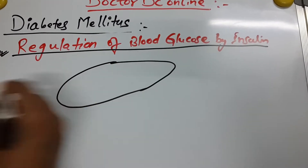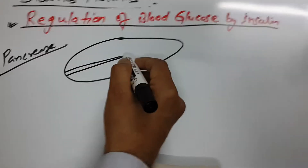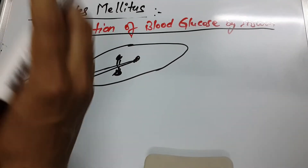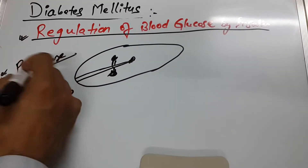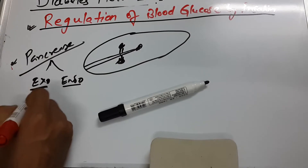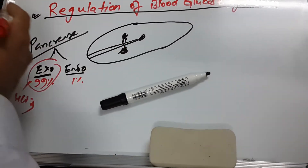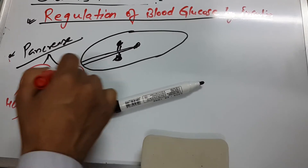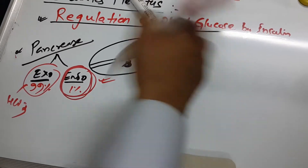The pancreas is the main production house. An important aspect of the pancreas is that it functions as both an exocrine and an endocrine gland. Exocrine function accounts for about 99% — it secretes bicarbonate and delivers it to the duodenum through the ampulla of Vater. The endocrine function is only 1%.